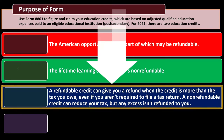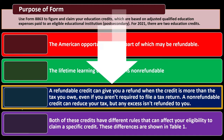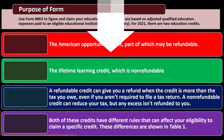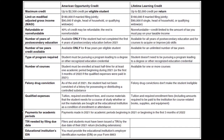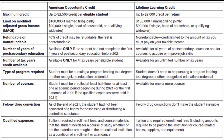A refundable credit can give you a refund when the credit is more than the tax you owe, even if you aren't required to file a tax return. A non-refundable credit can reduce your tax, but any excess isn't refunded to you. Both credits have different rules that can affect your eligibility, and these differences are shown in Table 1.